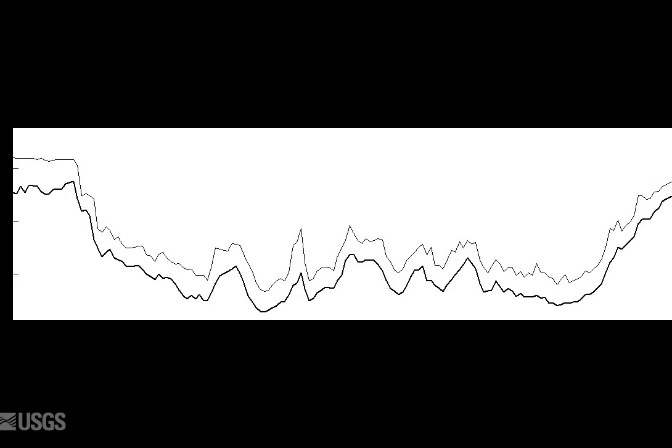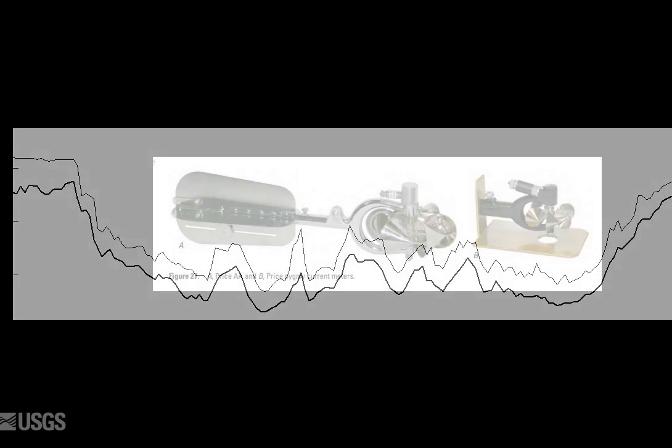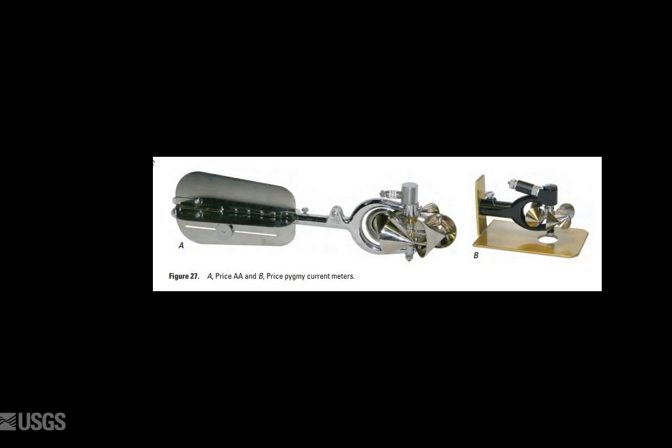In the USGS we use the midsection velocity area method. In the past this method was used with point velocity meters, but the same method can be used with ADCPs, as we'll discuss.